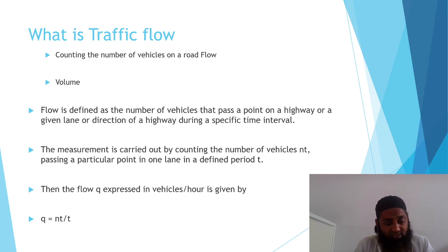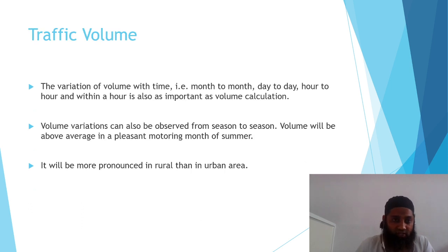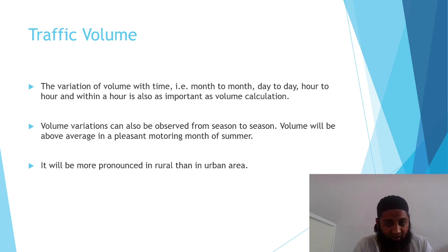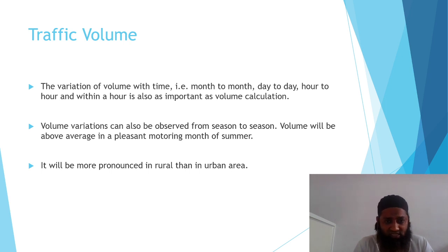The flow Q is expressed in vehicles per hour and is given by Q = NT / T, where NT is the number of vehicles and T is the time. So in that specific time, the flow of vehicles is calculated. Traffic volume variation with time — from month to month, day to day, hour to hour, and within an hour — is also an important part of volume calculation. Depending on the need, we calculate from one month to another, 24-hour counts, and sometimes even within one hour. Once we get the peak hour traffic time, we can segregate it further into minutes to get the specific count on that stretch.